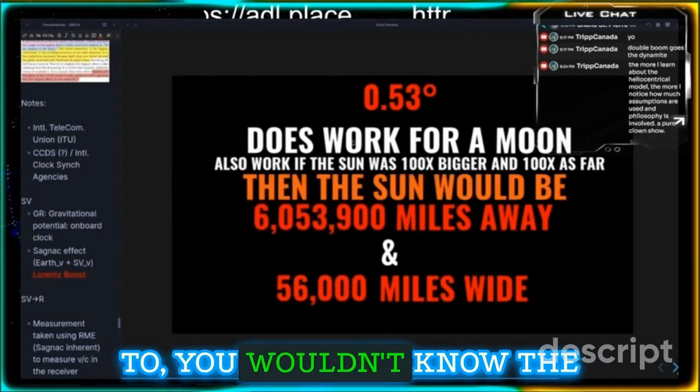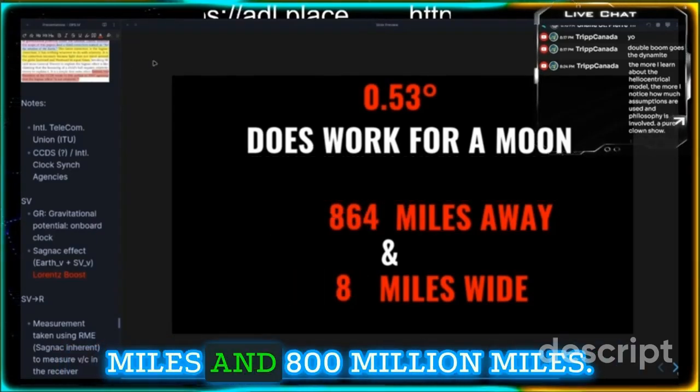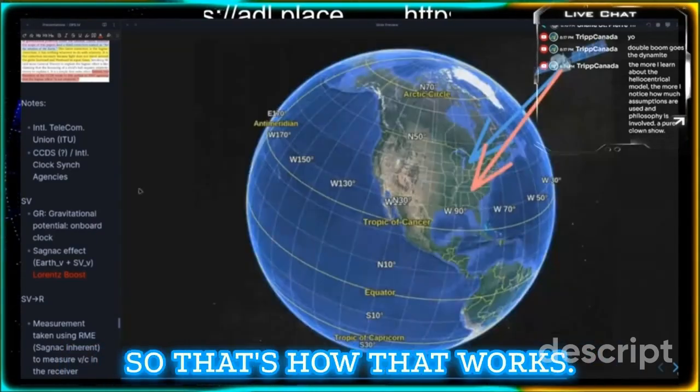You wouldn't know because the reference is so large. You wouldn't know the difference between 400 million miles and 800 million miles. So that's how that works.